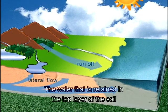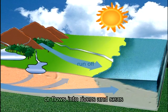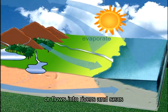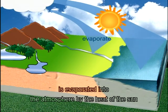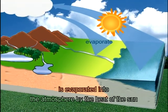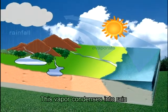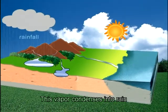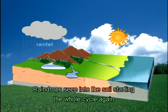The water that is retained in the top layer of the soil or flows into rivers and seas is evaporated into the atmosphere by the heat of the sun. This vapor condenses into rain. Raindrops seep into the soil, starting the whole cycle again.